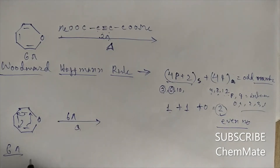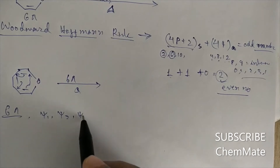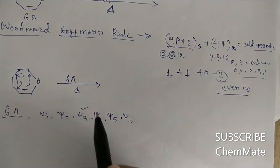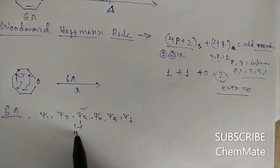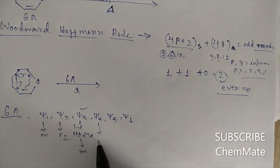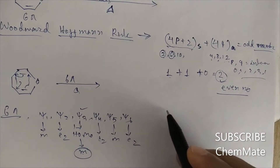For the 6π electronic system under thermal conditions, the molecular orbitals are ψ1, ψ2, ψ3, ψ4, ψ5, and ψ6. The HOMO is ψ3. ψ3 has mirror symmetry — this is the mirror symmetry and this is C2 symmetry. For mirror symmetry, the orbital pattern is plus, minus, plus, minus.